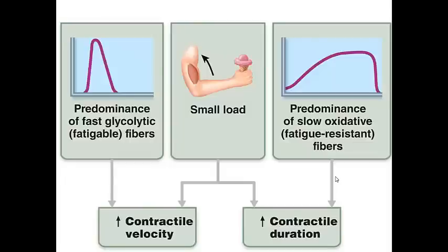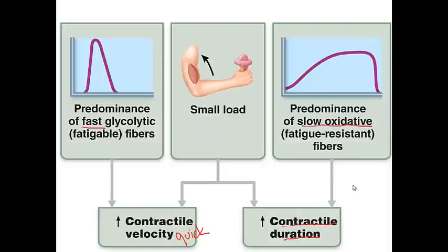The next slide shows the factors that influence the velocity and the duration of skeletal muscle contraction. One important factor of contractile velocity is the type of fiber. A fast glycolytic fiber has a very quick contractile velocity; however, this muscle fiber also fatigues very quickly — that is the downside.